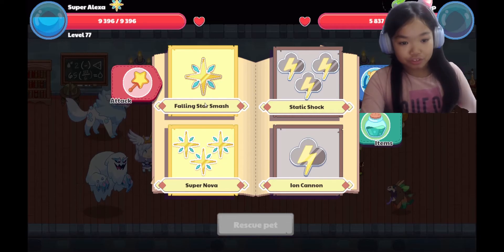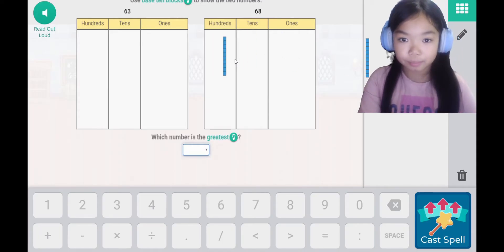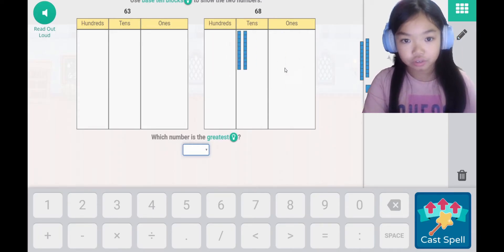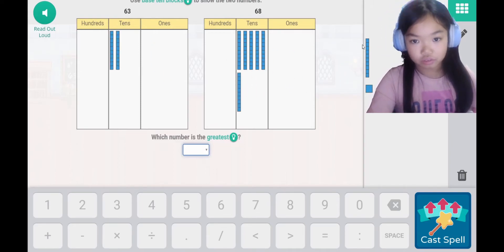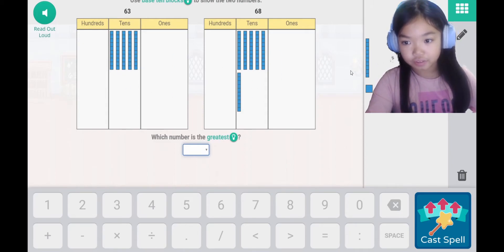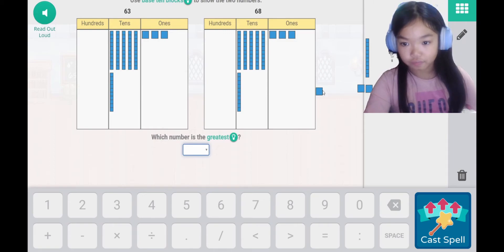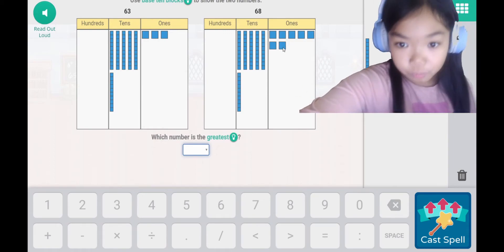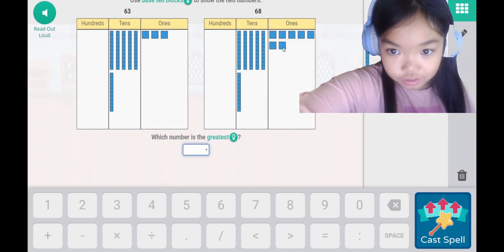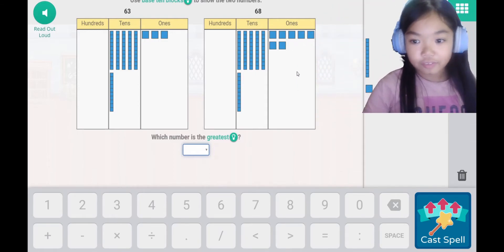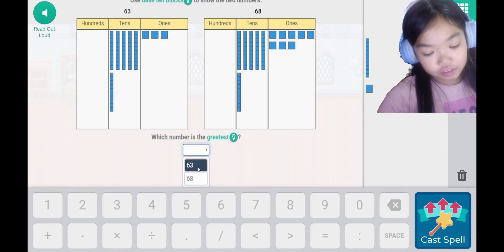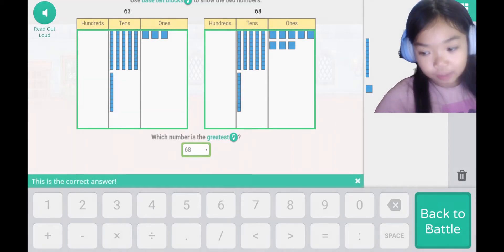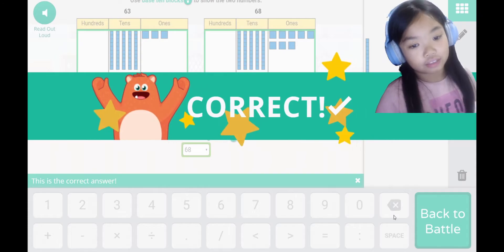Trip-trap. Use base 10 blocks to show the two numbers. 1, 2, 3, 4, 5, 6 and 1, 2, 3, 4, 5, 6. And 1, 2, 3, 1 and 1, 2, 3, 4, 5, 6, 7, 8. 1, 2, 3, 4, 5, 6, 7. It's 78. Which number is the greatest? 63 or 68? 68 because 8 is bigger than 3.